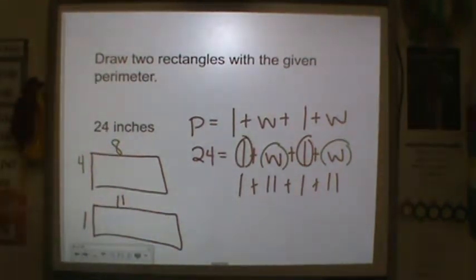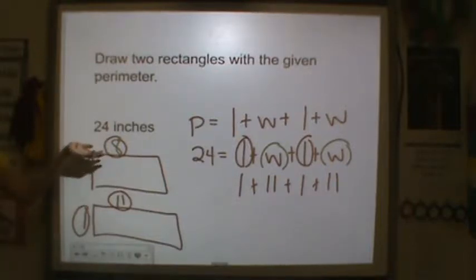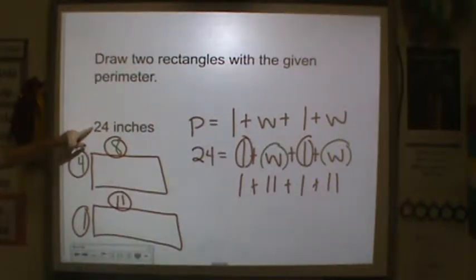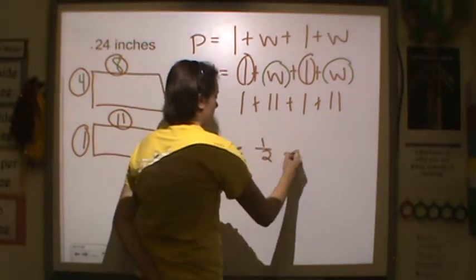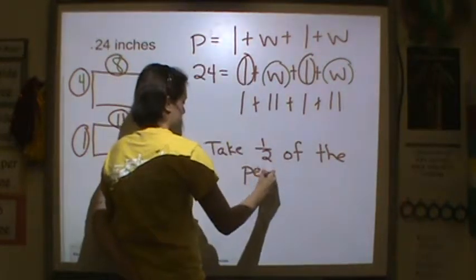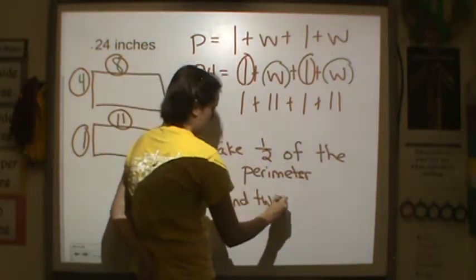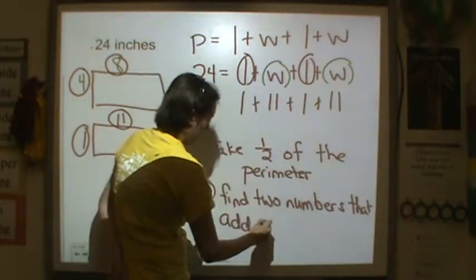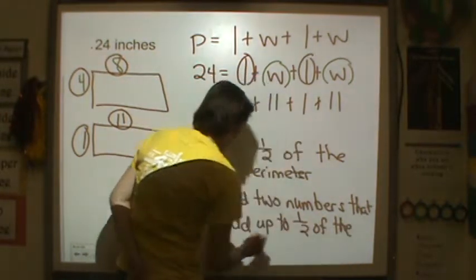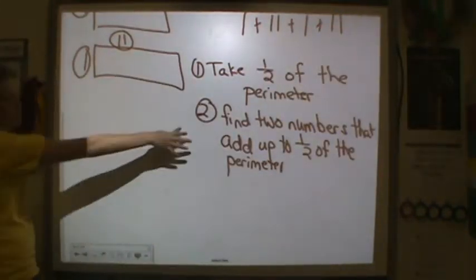Now, you might see a pattern here. 4 and 8 is equal to 12, 1 and 11 is equal to 12. So an easy way to do this is if you take the perimeter and you divide it in half and find two numbers that equal that, you'll find the perimeter. Take half of the perimeter and then find two numbers that add up to half of the perimeter. Those two numbers will be your length and your width. Make sure you wrote that down in your notes because that will really help you.